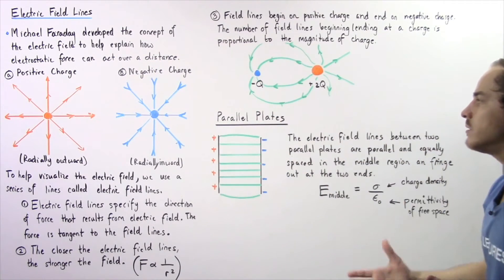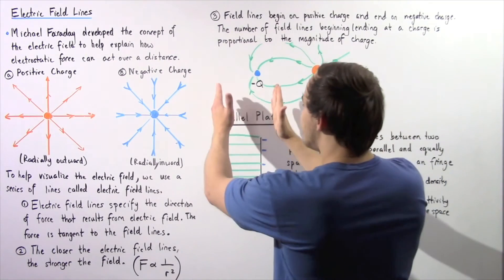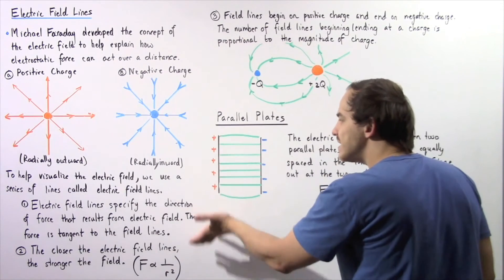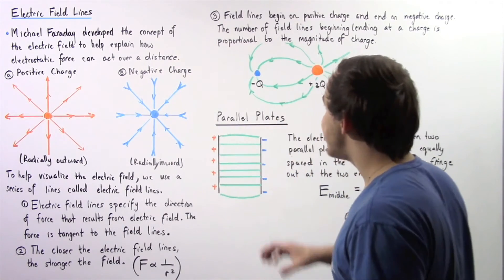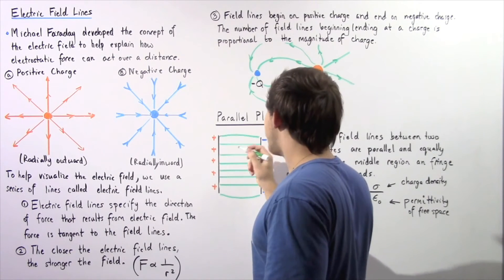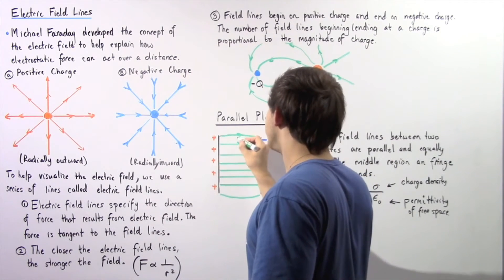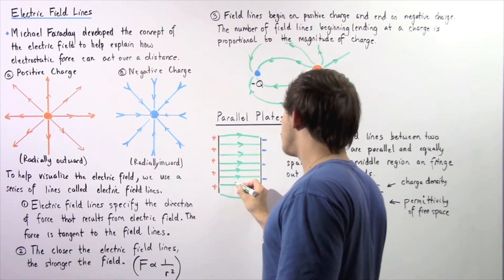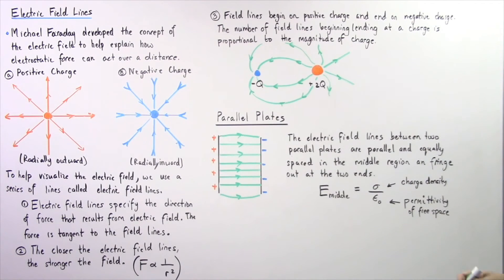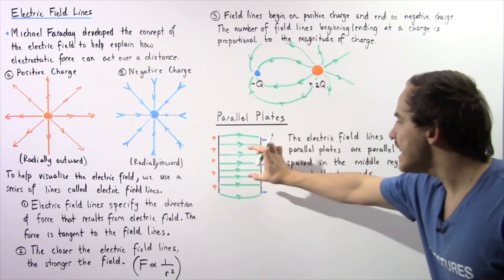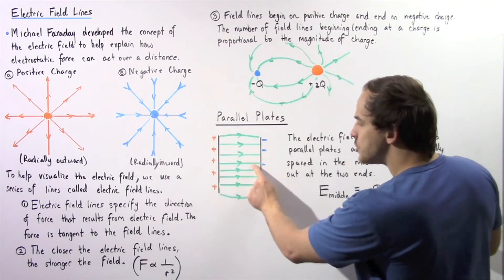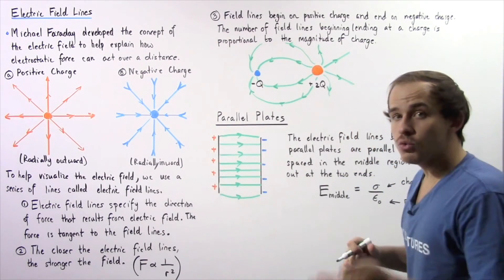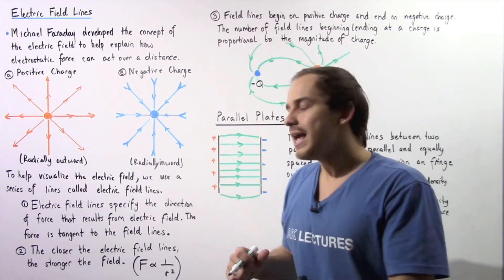Finally, let's examine parallel plates. Suppose we have two parallel plates — on one end we have a positive charge density, and on the other parallel plate we have a negative charge density. The field lines begin on the positive end, extend outward, and go to the other side, with arrows pointing from positive to negative. The electric field lines between the parallel plates are parallel to one another, equally spaced in the middle region, and fringe outward at the ends. The electric field in the middle region is uniform.